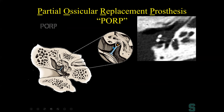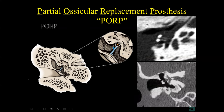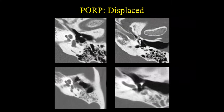Here is an example of a partial ossicular replacement prosthesis. We can see the ossicular prosthesis; with a leap of faith we can see the stapes and the oval window. The stapes is maintained, the incus was eroded, and the flat portion of the prosthesis abuts the tympanic membrane — so any motion is directly transmitted to the stapes and then to the oval window. Here's another example where the stapes was intact; this small rounded cap attaches to the tympanic membrane, and sound waves beating against it are directly transmitted to the oval window.